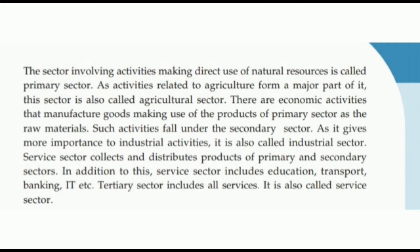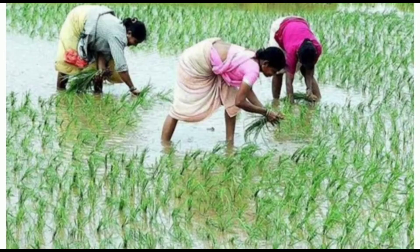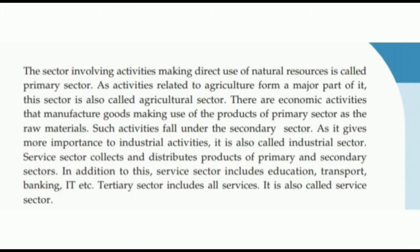Agriculture is an example of the primary sector. This sector is also called the agricultural sector. We know that we use natural resources like soil, water, and air for agriculture. So agriculture is a primary sector activity.